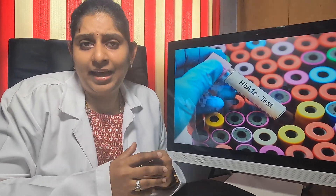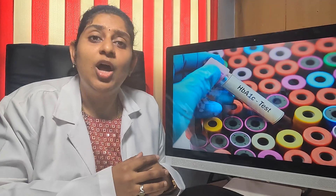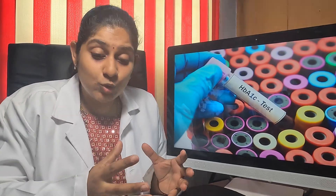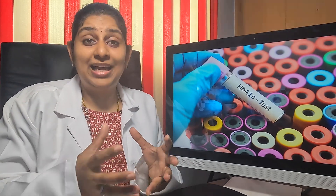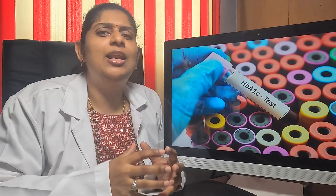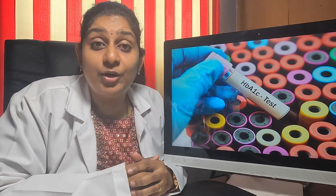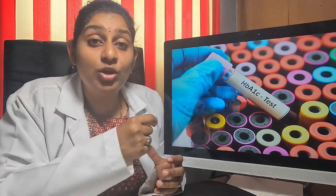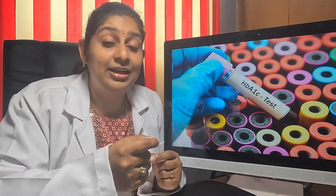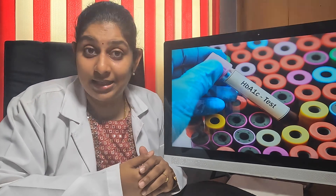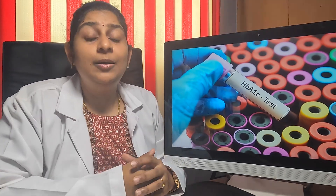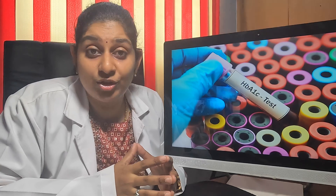Apart from this, in a developing nation like India, we can also use the immunoturbidometric method — running the HbA1c in a biochemistry analyzer. Recent research papers, referenced below, have proven that the immunoturbidometric method can be a very cost-effective and reliable method of testing HbA1c, at par with the HPLC method.